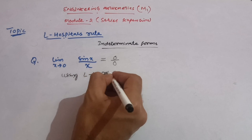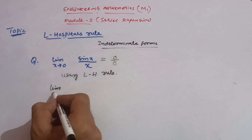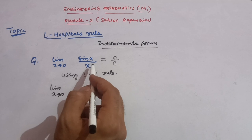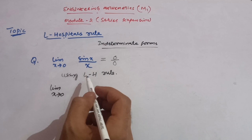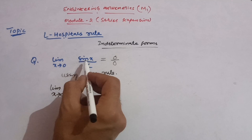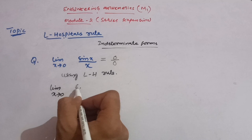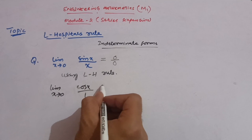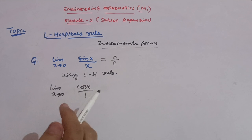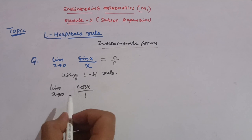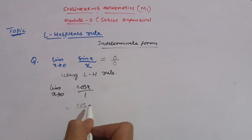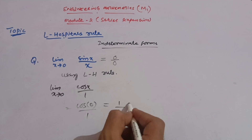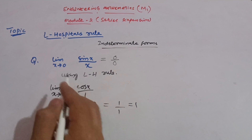Using L'Hôpital's rule: limit x tends to zero — differentiate the two functions separately. sin(x) is a trigonometric function and x is algebraic. The differentiation of sin(x) is cos(x), and the differentiation of x is 1. Now put x = 0: cos(0)/1. The value of cos(0) is 1, so we get 1/1 = 1. We have obtained the constant value k = 1, so this is the solution.